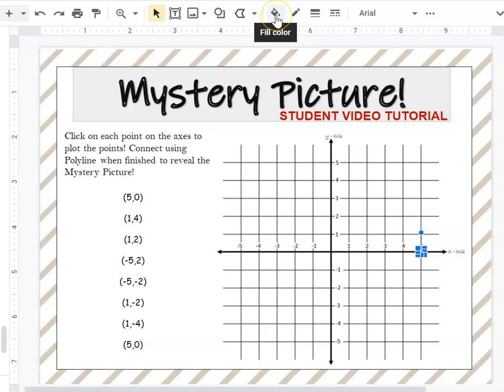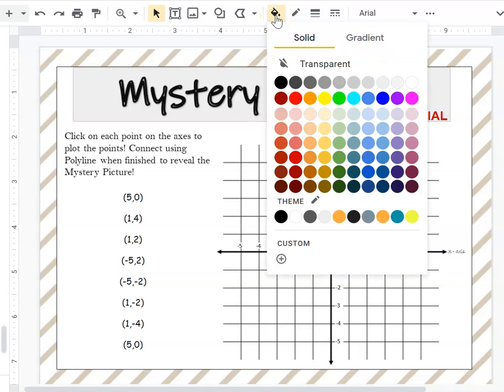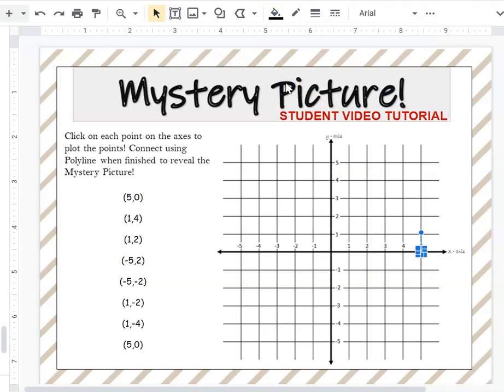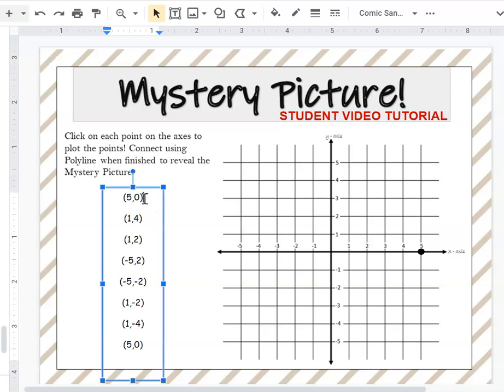Once you click on that point, hover over to the fill color bucket and choose your color. Once you press on that color, it will fill in your point. You want to mark off your coordinate pairs so you know which ones are already plotted.